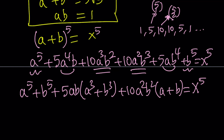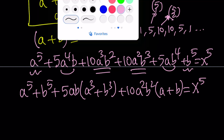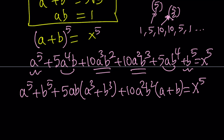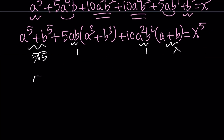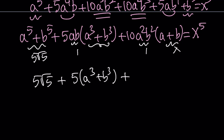So now I know a⁵ + b⁵, which is 5√5. I don't know a³ + b³ yet, but hopefully I can find it. I know a·b = 1, and (a·b)² = 1. And a + b = x. So I'll leave a³ + b³ for now, isolate it, and note that 10a²b²(a + b) = 10(1)²·x = 10x, which equals x⁵.